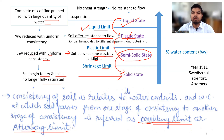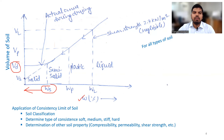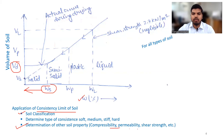These limits denote the water content at which soil passes from one stage of consistency to another. The plots show the variation of volume of soil with respect to water content. Up to the shrinkage limit, reduction in water content causes a linear variation in the volume of soil. But below the shrinkage limit, any further reduction in water content will not affect the volume of the soil. This consistency limit is used for soil classification and determination of other soil properties like compressibility, permeability, and shear strength.